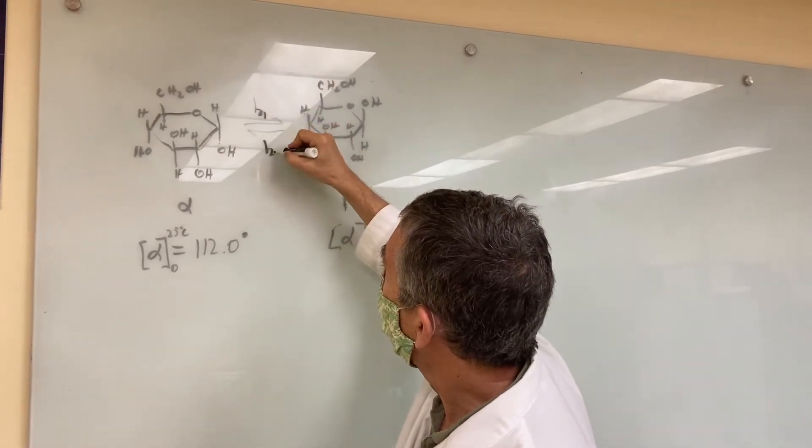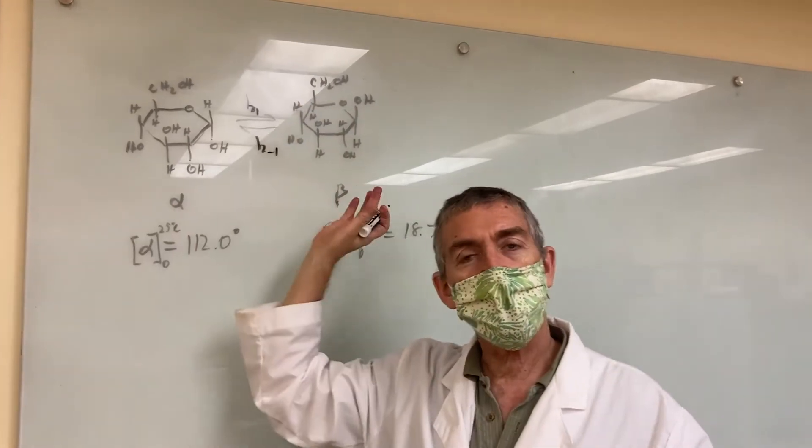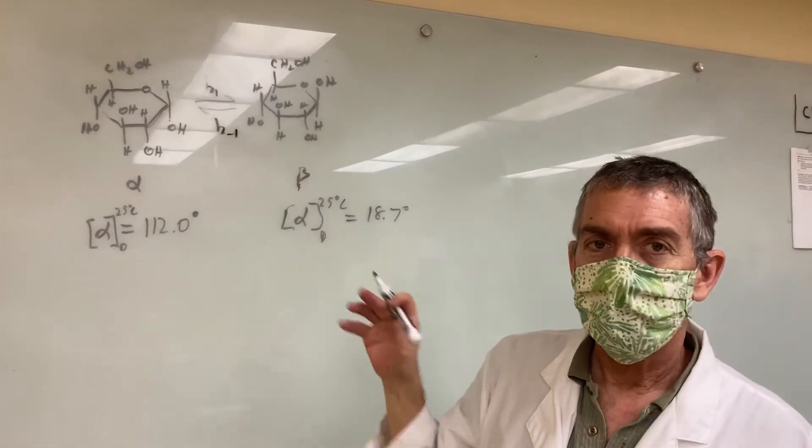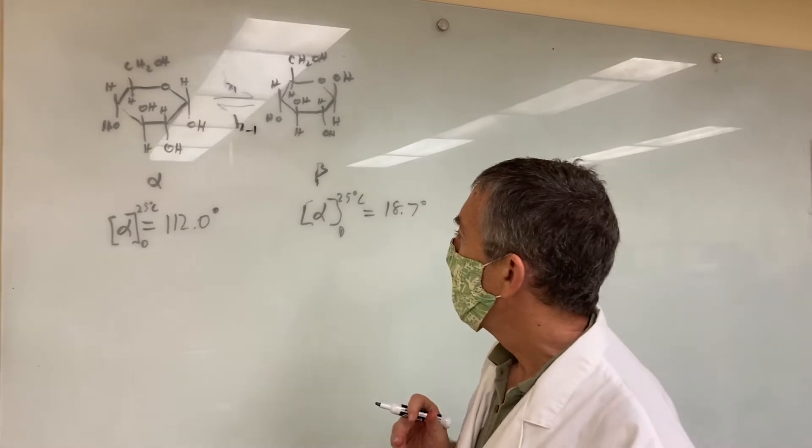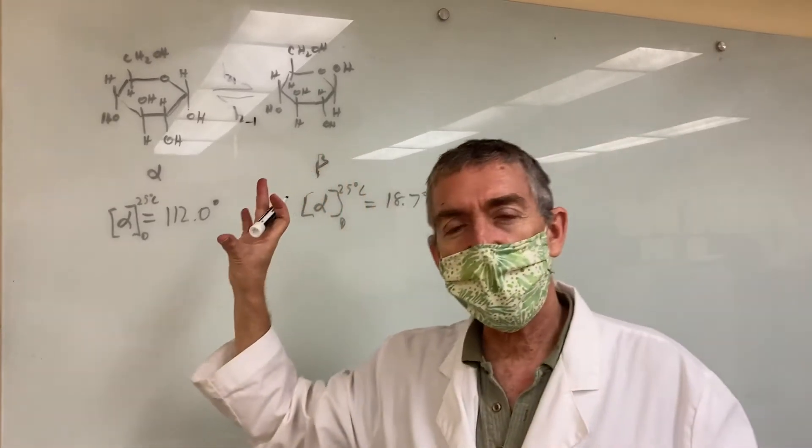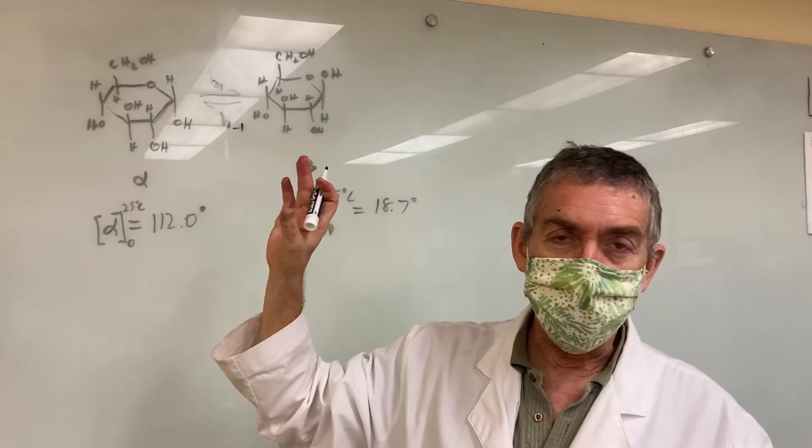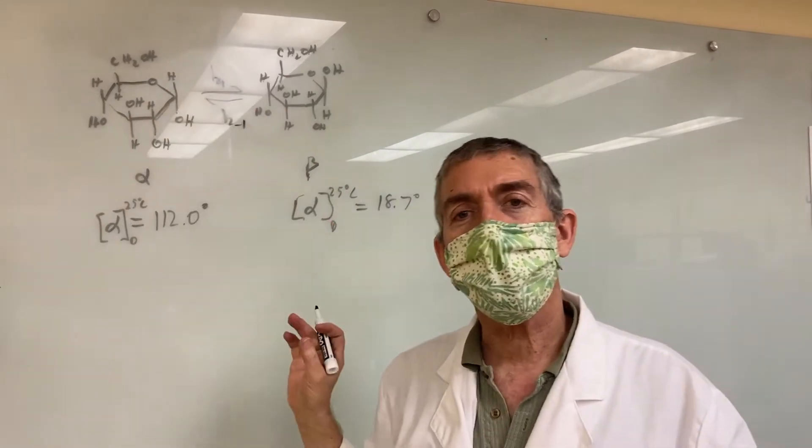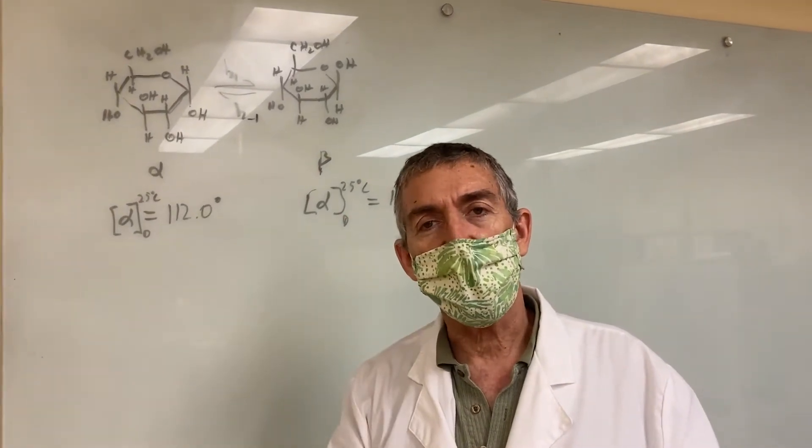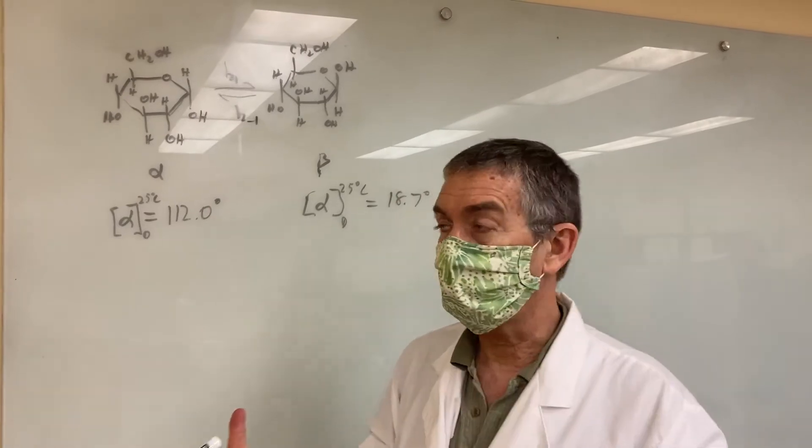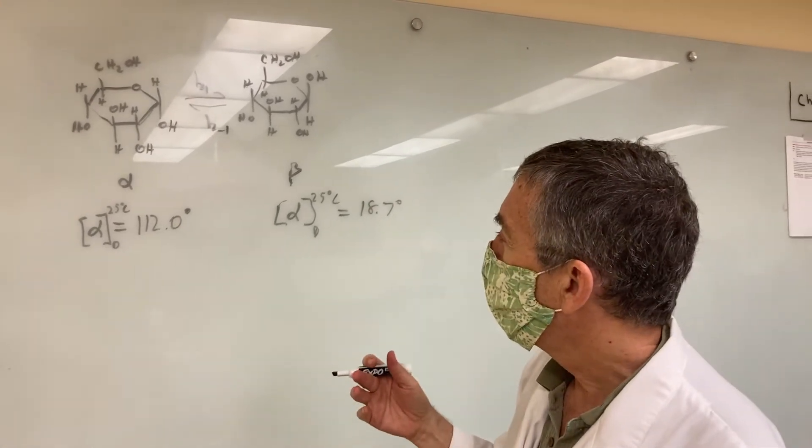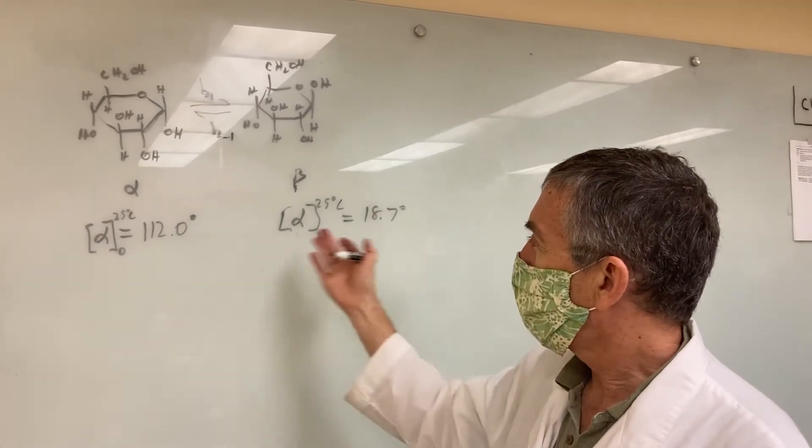So there's going to be a rate constant in the forward direction and a rate constant in the reverse direction. We're going to follow this reaction in a clever way. Each of these molecules is chiral. So it will rotate polarized light, plane polarized light.